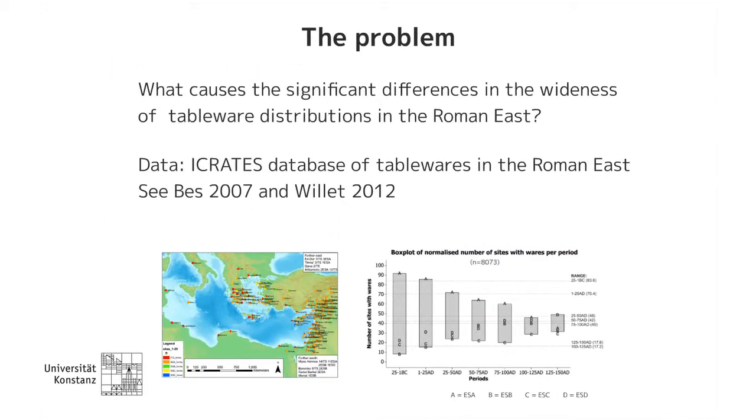So we want to zoom in on those overlaps and try to explore those areas more — to zoom in on where all these models compare — and I will give an example of that, starting with a problem. This is an archaeological case study, and the problem I'll be focusing on for the next half an hour is: what causes the significant differences in the wideness of tableware distributions in the Roman East?